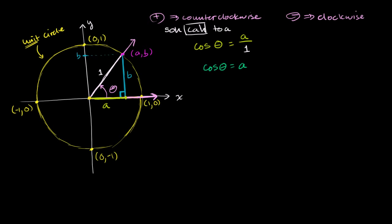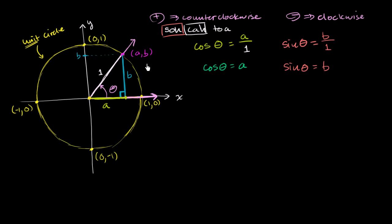Now let's think about the sine of theta. We just look at the SOH part of SOH CAH TOA, which tells us sine is opposite over hypotenuse. The opposite side here has length b, and the hypotenuse has length 1, so sine of theta equals b. So this coordinate point (a, b) where our terminal side intersects the unit circle — a is the same thing as cosine of theta, and b is the same thing as sine of theta. We just used our SOH CAH TOA definition.